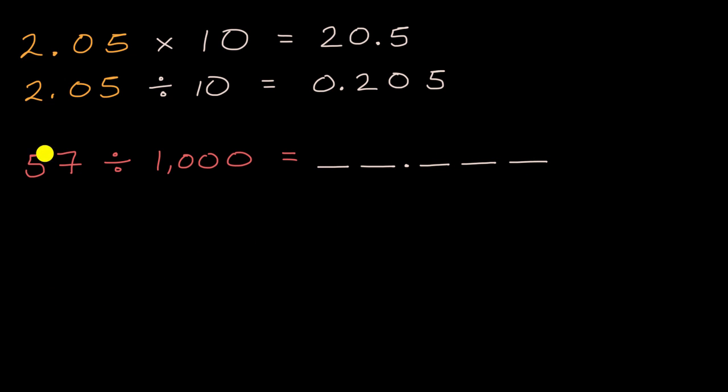Our five was in the tens place. We're going to shift three places to the right: one, two, three. So what was five tens is now five hundredths. Our seven was in the ones place, and we shift three places to the right: one, two, three. What was 57 is now fifty-seven thousandths.